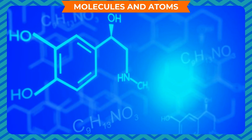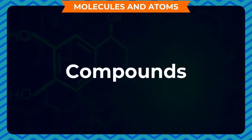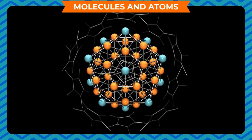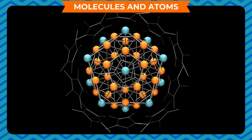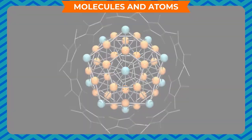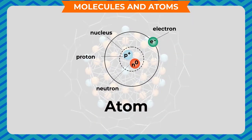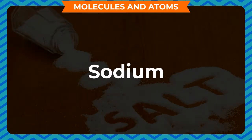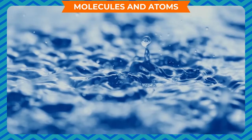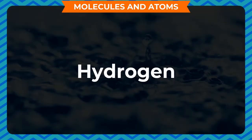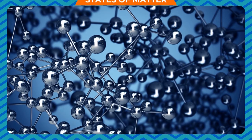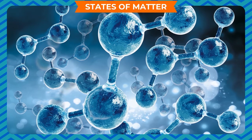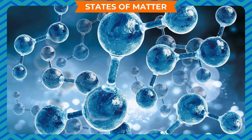Substances made of two or more types of elements are called compounds. Most common substances are compounds because almost all substances are made up of two or more types of atoms. For example, salt is made up of sodium and chlorine atoms, and water is made up of hydrogen and oxygen atoms.